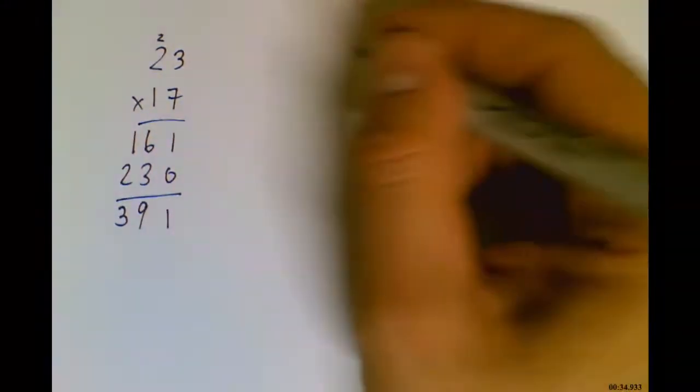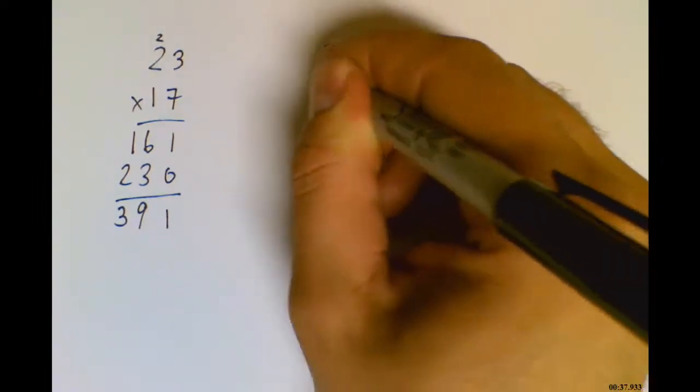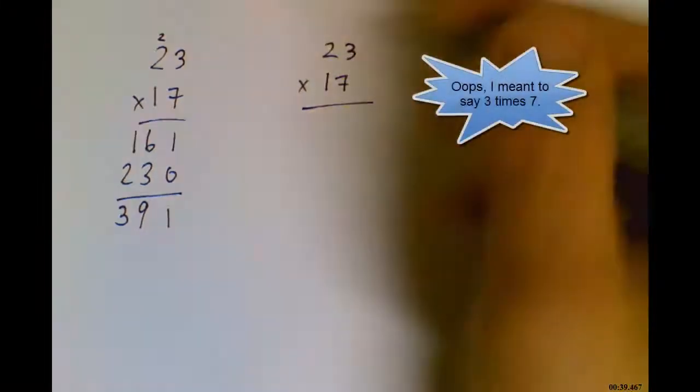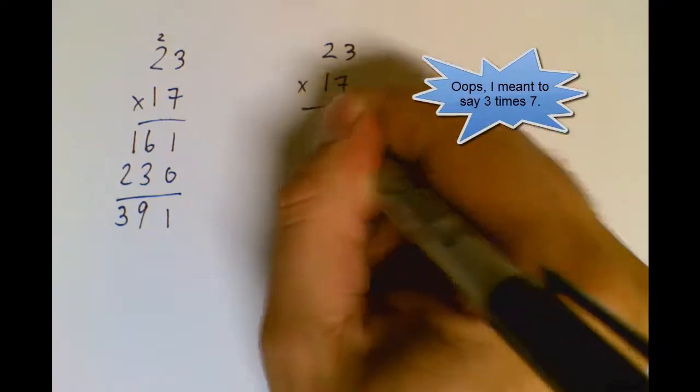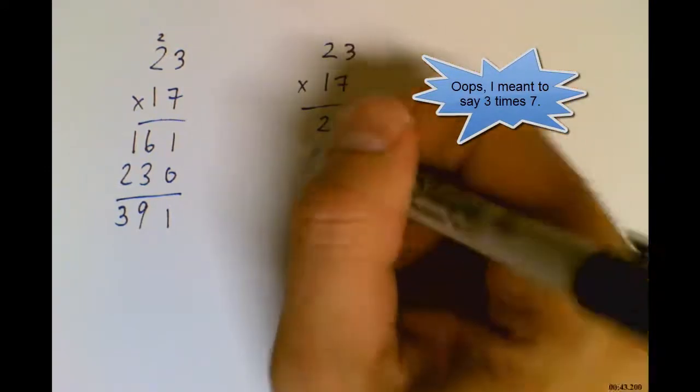Now, let me try doing that another way. So 3 times 7 is 21. 20 times 7 is 140.